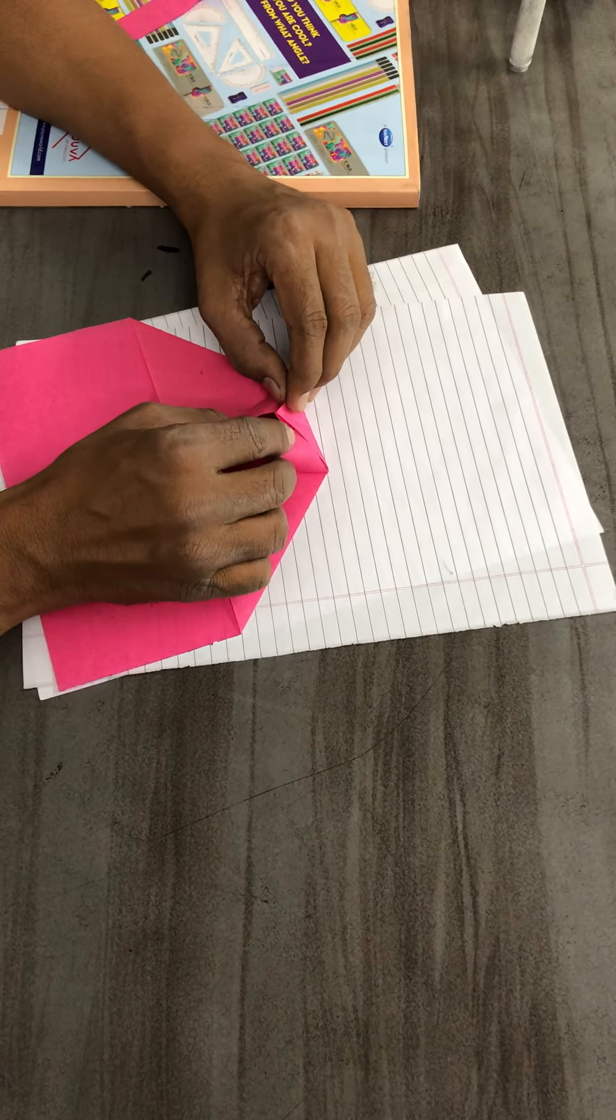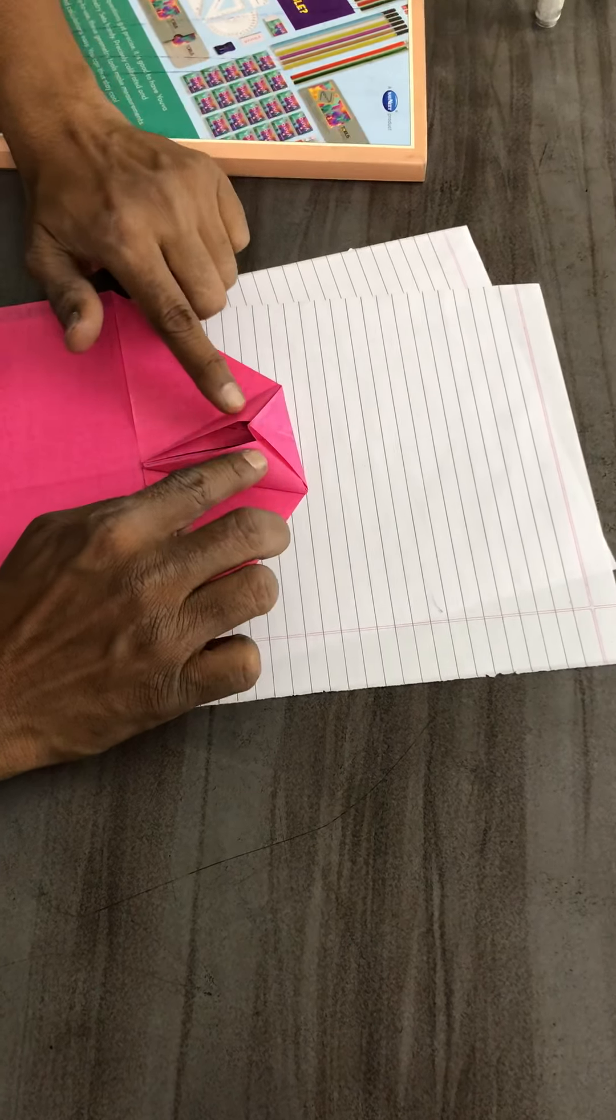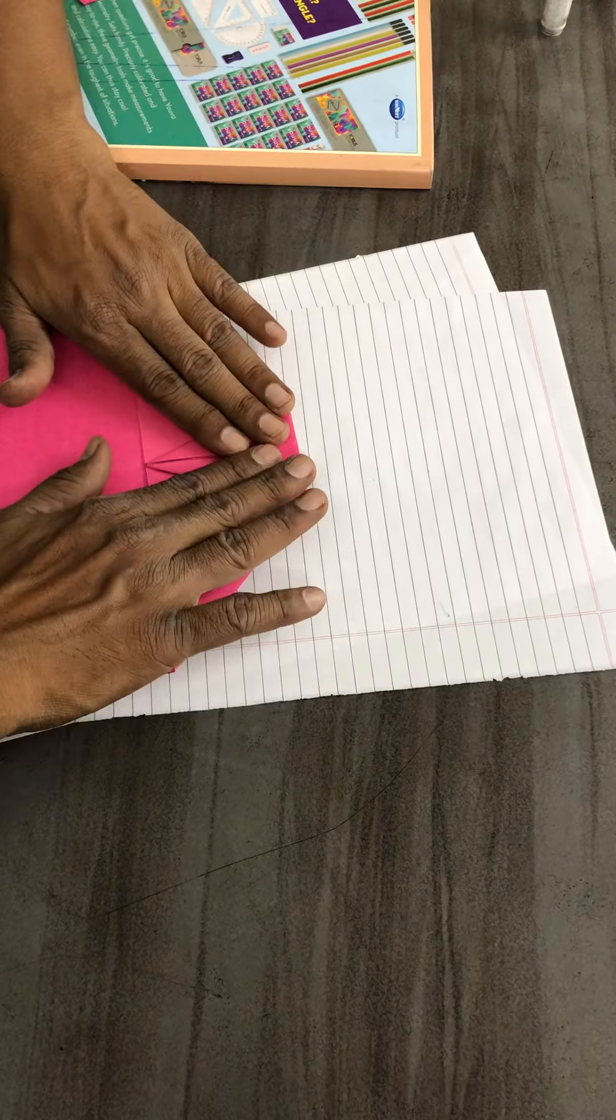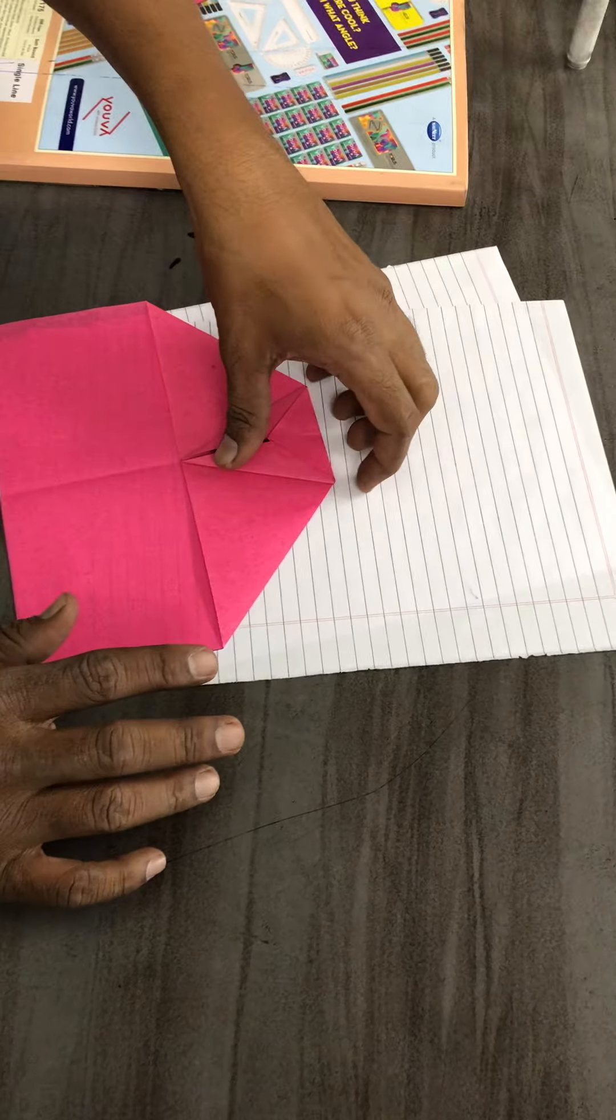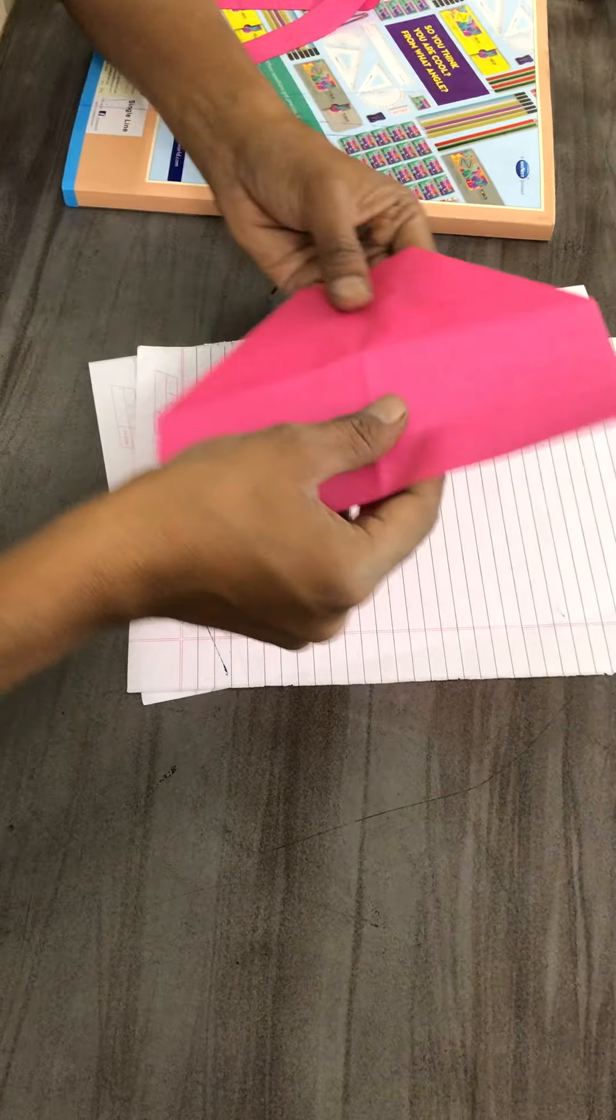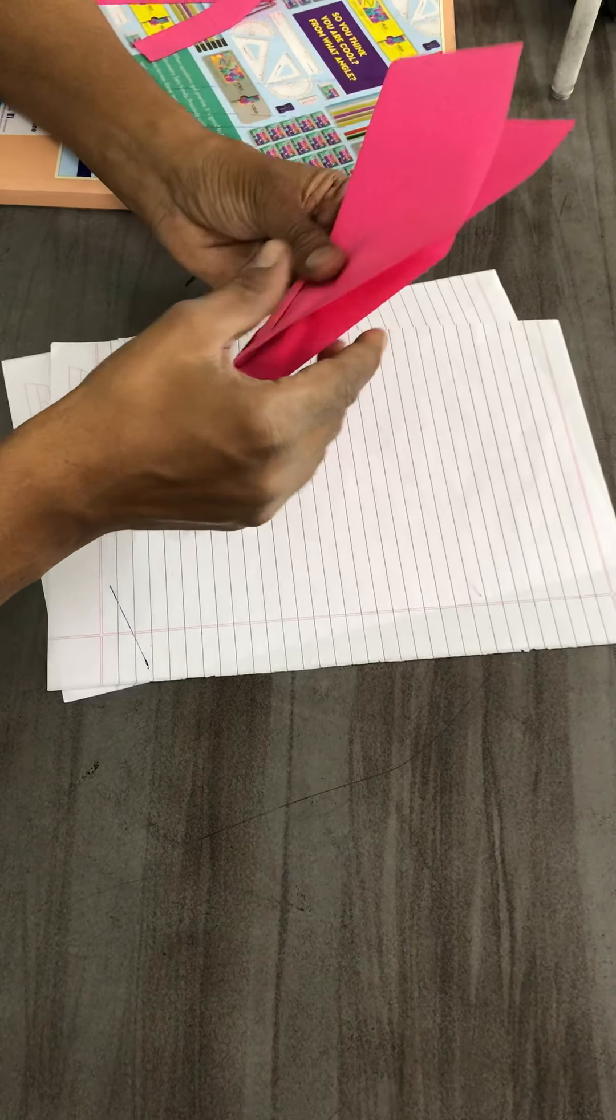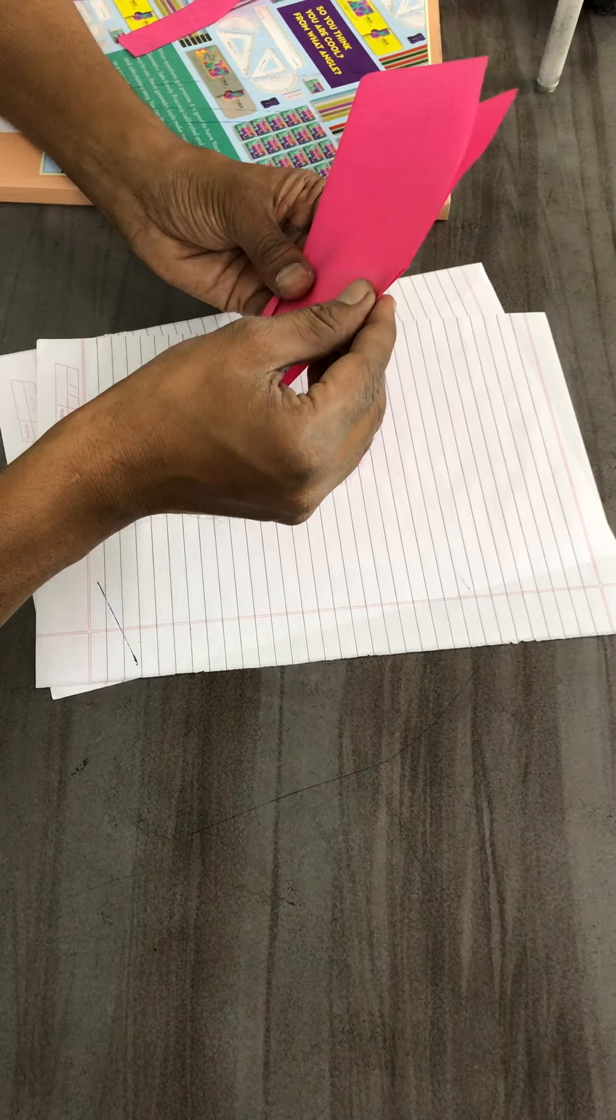Put this paper on both sides like that. Turn upside down and adjust corner to corner.